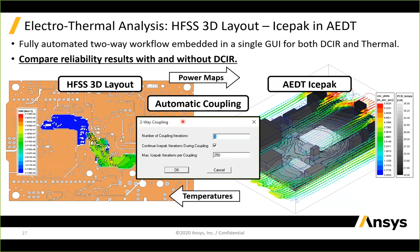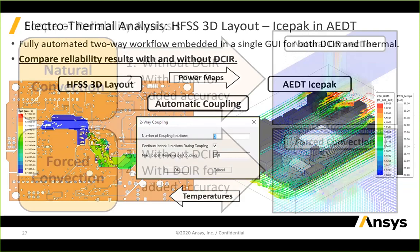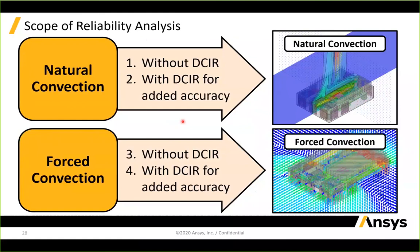Another goal of the study is to compare reliability results with and without DCIR losses. Does adding those losses add value in terms of reliability prediction? Many times PCB losses are not as large as component power dissipation, but we want to see if it moves the needle in terms of reliability. In summary, we have four models: natural convection with and without DCIR, and forced convection with and without DCIR.